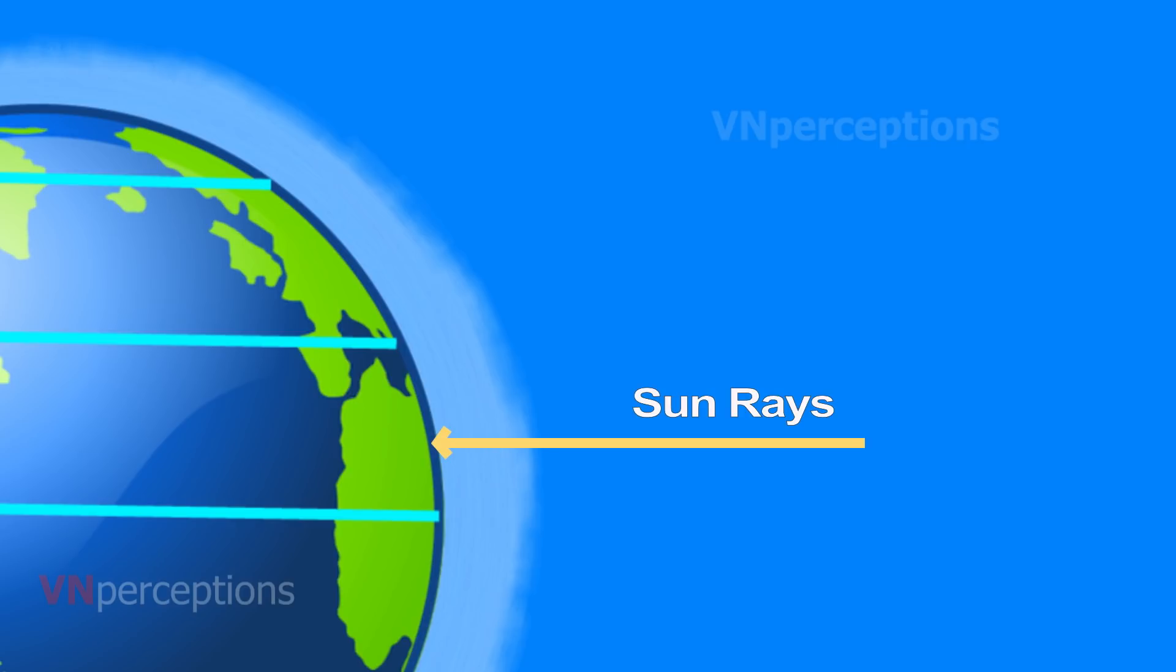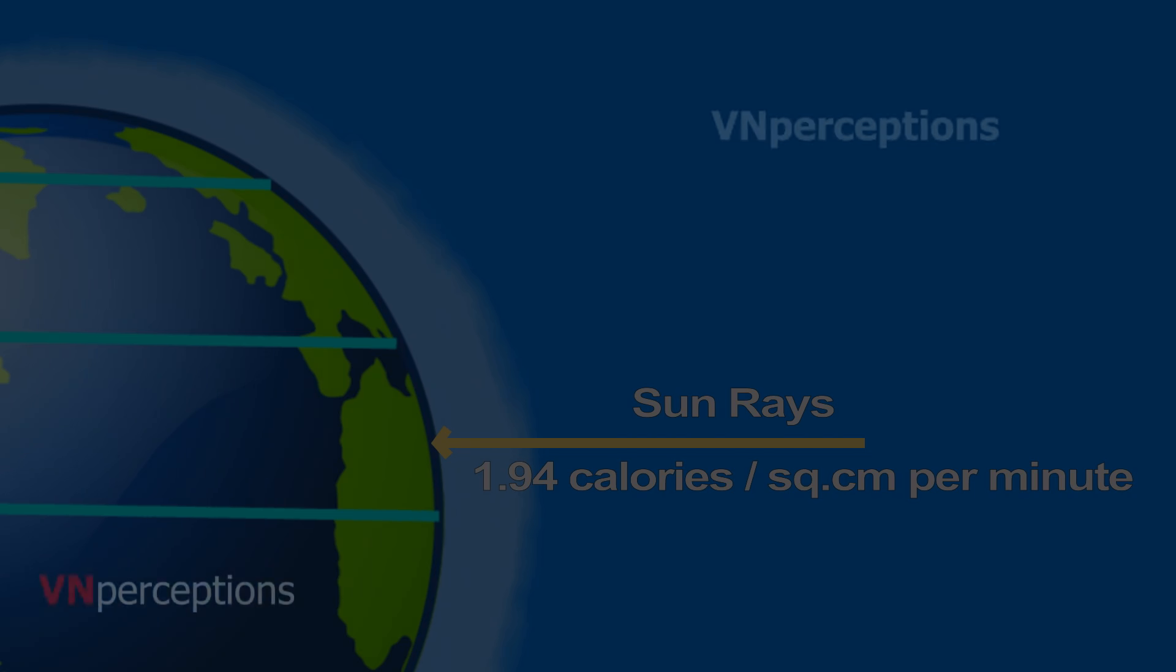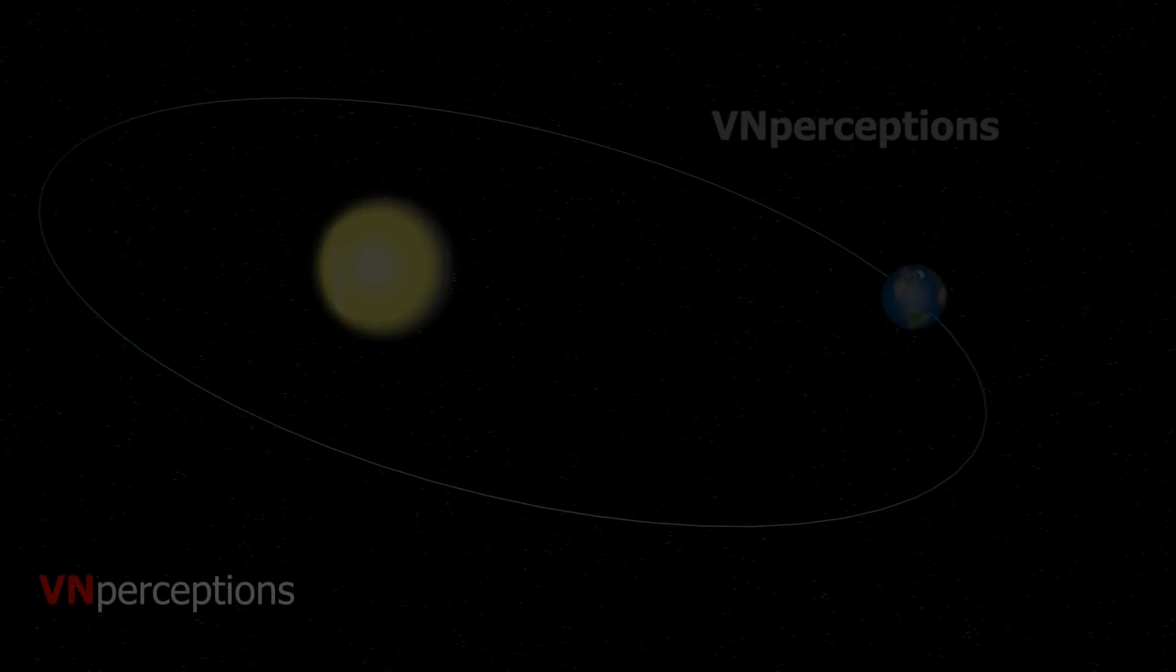On average, the earth receives 1.94 calories of heat per square centimeter per minute at the top of the atmosphere.